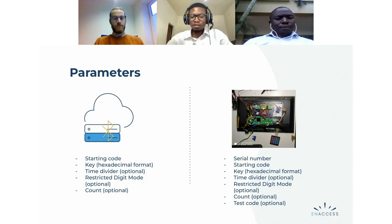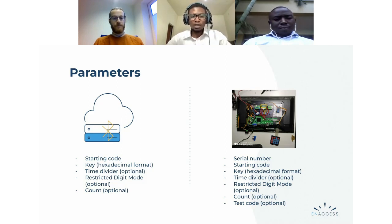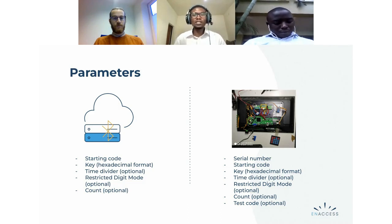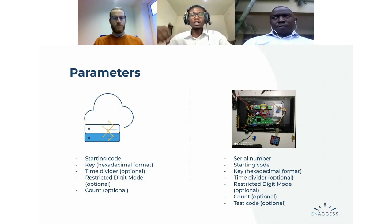Same thing for the device. We need the serial number — this is not really used during token generation, but it's important for every manufacturer to handle serial numbers for their devices. We also have the starting code, the key which should be in hexadecimal format, the time divider, the restricted digit mode, and the count. There is also the test code — after setting up the device, if you want to test it for a couple of minutes or seconds, that's where this will be used, and every manufacturer will have their own way to implement this use case.